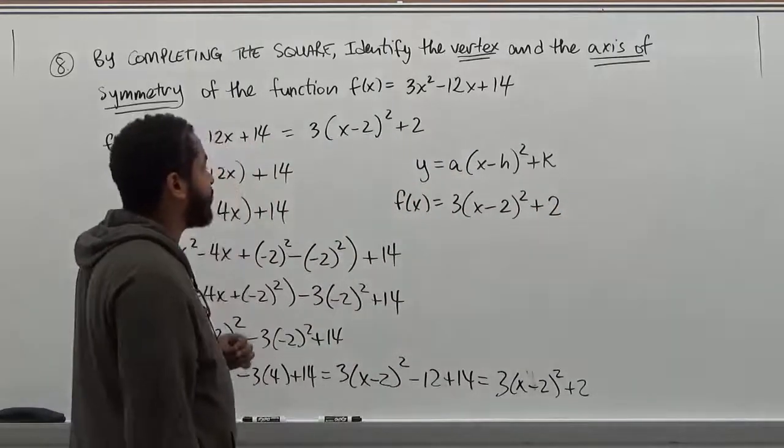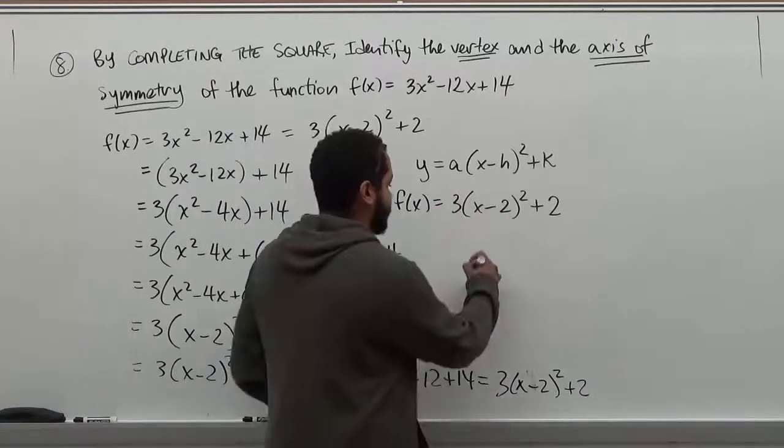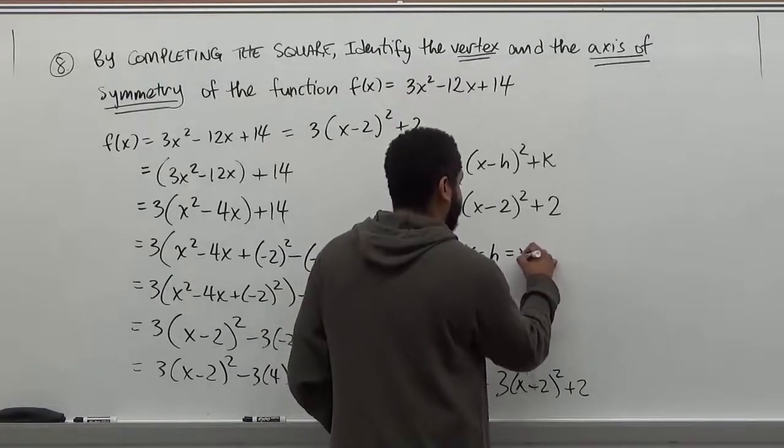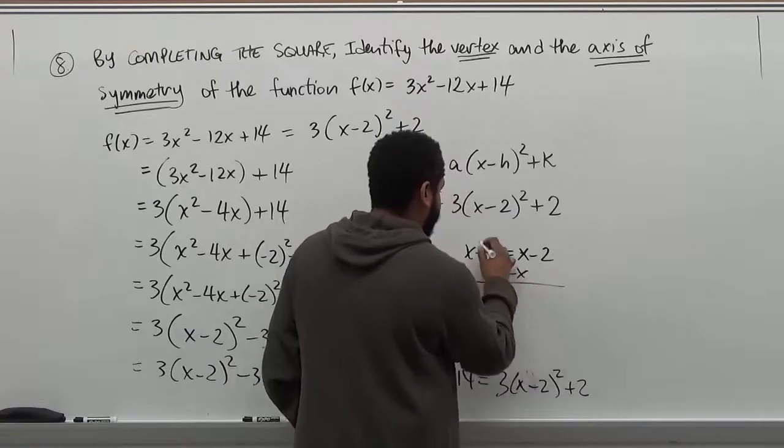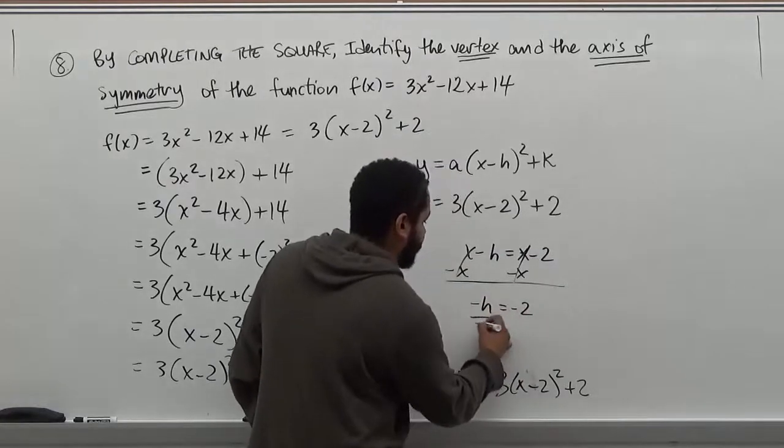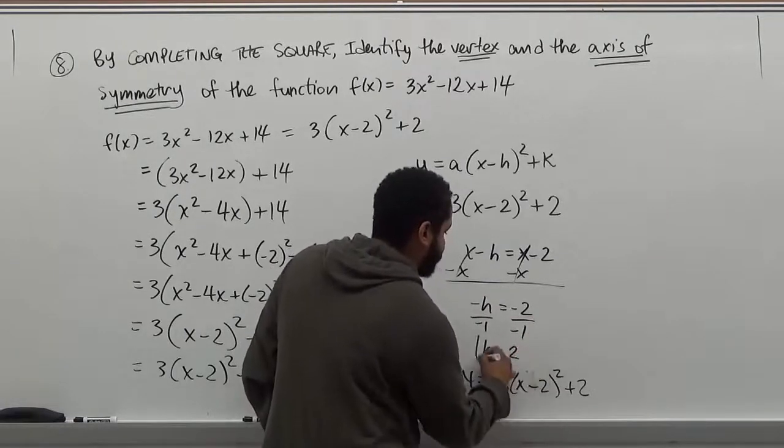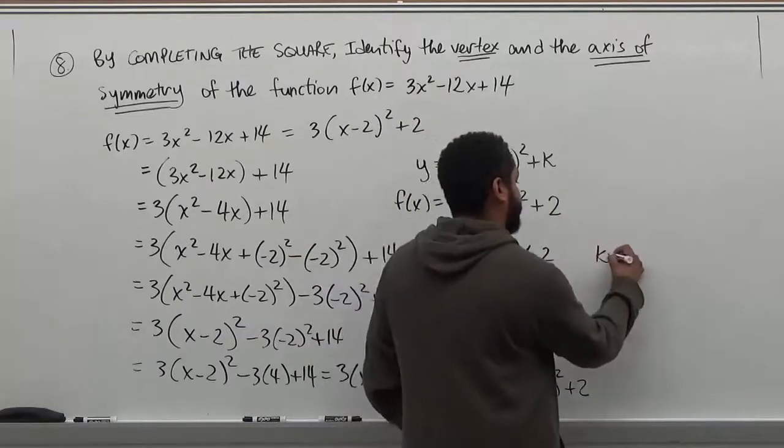So here, based on this, we know if we set this equal to this, we could determine what h is. So x - h = x - 2. We subtract x to both sides and these go away, these go away. We have -h = -2. We divide by -1. We could solve for h. And h here becomes just 2. And our k is what it is. We could just say k = 2.